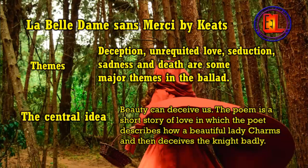In that poem, deception, unrequited love, seduction, sadness, and death are some major themes. The central idea of the poem is that beauty can deceive us. The poem is a short story of love in which the poet describes how a beautiful lady charms and then deceives the knight badly. So I hope this clarifies the difference between theme and central idea in a literary work.